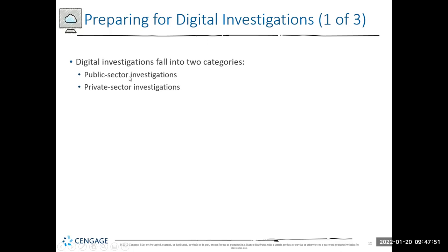What happens when you do an investigation for an agency of the VI government? The VI government is a public organization — any form of government is considered to be public because you have citizens who elect officials to manage and run municipal, city, county, state, territorial, national, and international governments. Public sector investigations can involve civil or criminal matters. Criminal means jail or fines; civil means liability — essentially a monetary penalty.